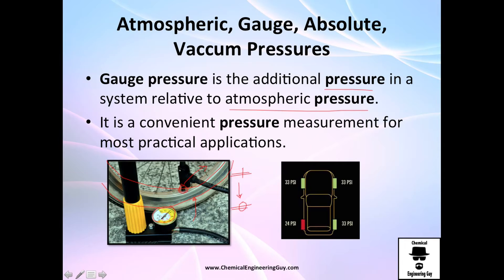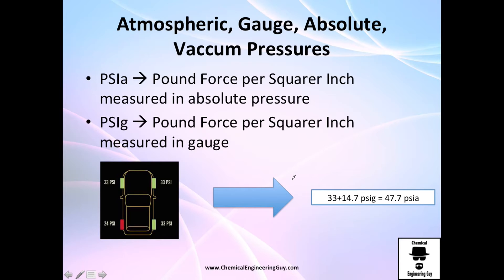The typical recommended tire pressure is 32 to 34 PSI — pounds per square inch, which is pounds-force per square inch. If you are using the English system, you are probably familiar with PSI. Note the notation: 'psia' (with a little 'a') means absolute pressure, while 'psig' (with a little 'g') means gauge pressure.